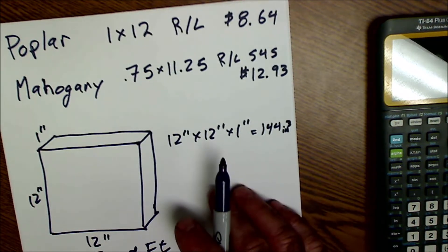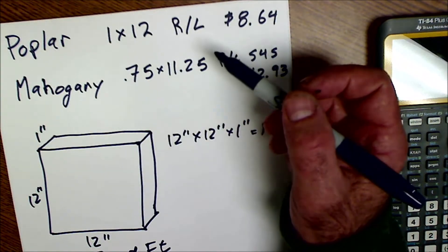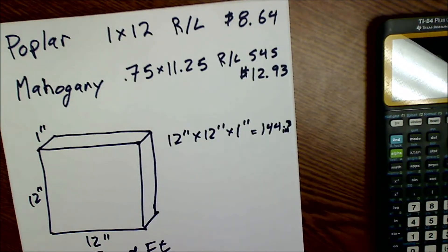And then usually prices are given in the board foot. Here in this retail store, they're giving it by the linear foot, so it's really hard to figure out what's a good deal, what's not a good deal.